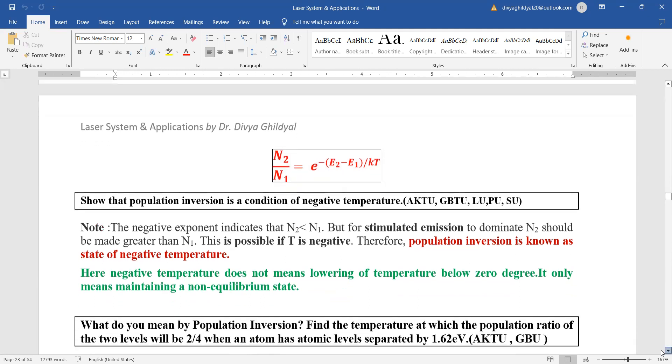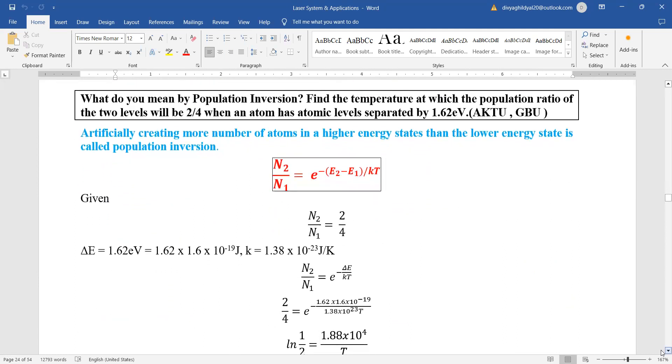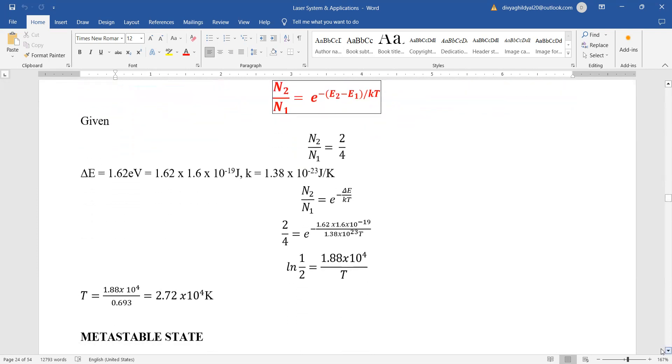Next question that is asked is a very common numerical which has been asked many number of times in your exams. It has been included with the definition of population inversion. What do you mean by population inversion and you have to find the temperature where you have been given the ratio of N2 upon N1 and you have been given the energy value. So once again N2 upon N1 is equal to E to the power of minus E2 minus E1 divided by KT.